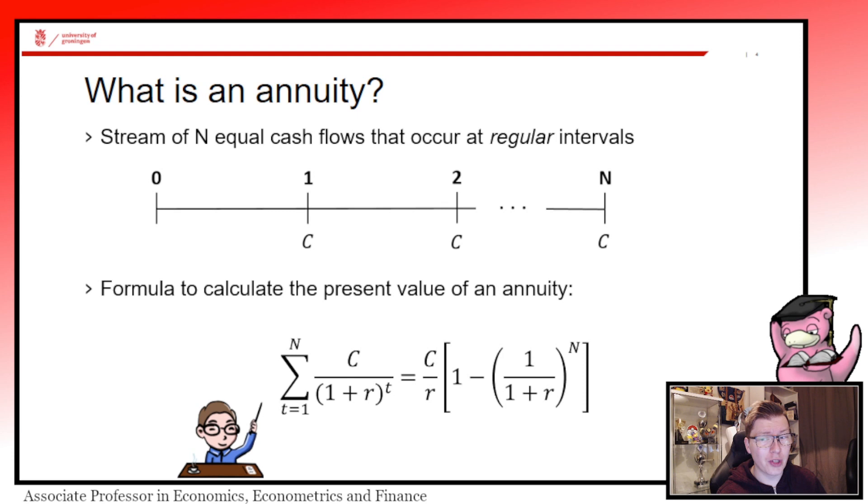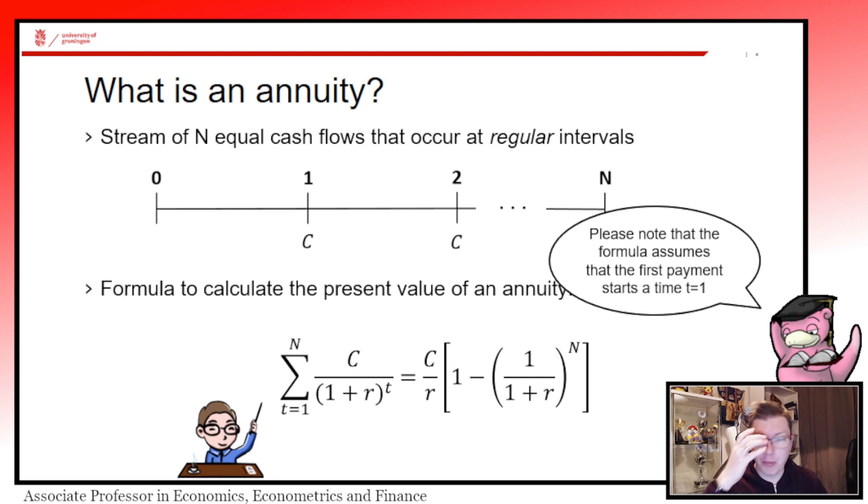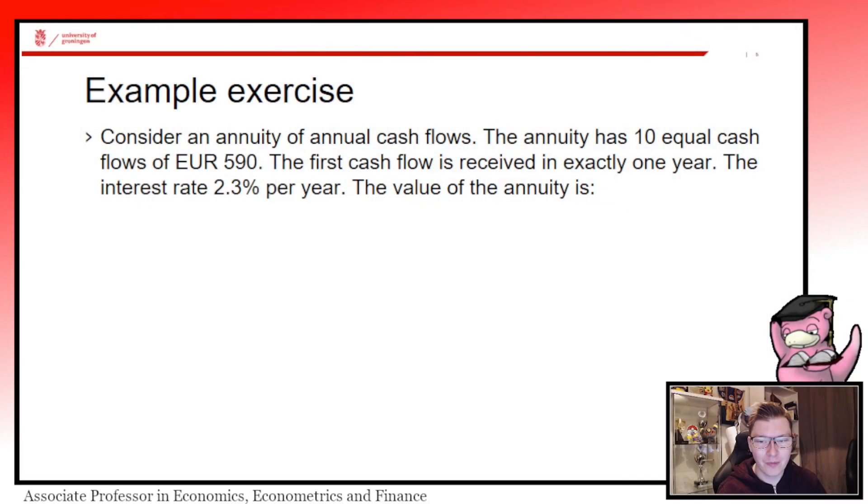That is correct, we have to note just like with the perpetuity, this formula here again assumes that the first payment starts at time t equals one. If we today are in time zero, then it will start in time one.